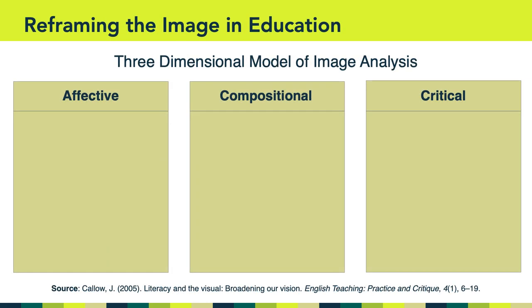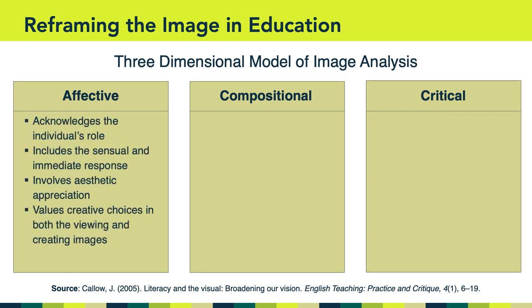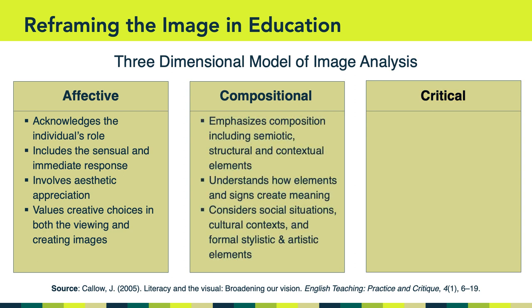At this point, Callow introduces us to his three-dimensional model of image analysis. He argues that if we really want to prepare people to live in such a visual society, we're going to need to teach them how to analyze visual content from three different perspectives — the affective, the compositional, and the critical. The affective dimension acknowledges the individual's role. It includes the sensual and immediate response an individual might have when viewing a visual artifact. This dimension also involves aesthetic appreciation and values creative choices when it comes to both the viewing and the creating of images.